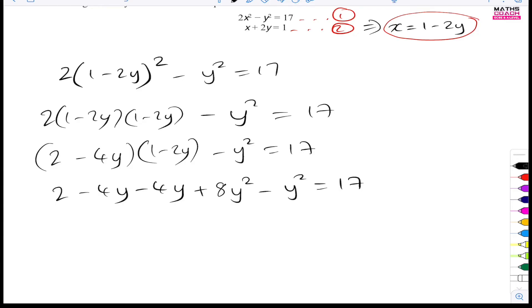So now I will just tidy up by collecting all the like terms. So you can see here, you've got like terms right there. And you've also got like terms right there as well. So that would be 2 minus 8y minus 4y minus 4y minus 8y. And then 8y squared take away 1y squared will be plus 7y squared. And that's going to be equal to 17.